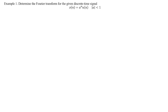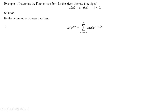We will see the solution. By the definition of the Fourier transform, X(e^{jω}) equals the summation from n = minus infinity to plus infinity of x(n) · e^{-jωn}.